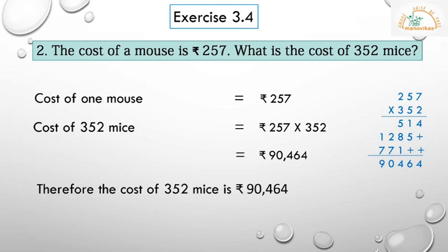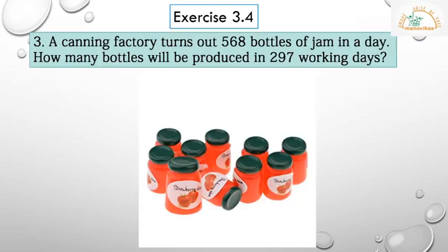Question 3: A canning factory turns out 568 bottles of jam in a day. How many bottles will be produced in 297 working days? In one day the factory turns out 568 bottles of jam. We have to find how many bottles of jam will be produced in 297 working days.